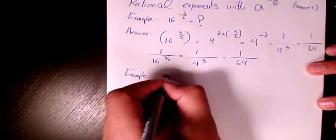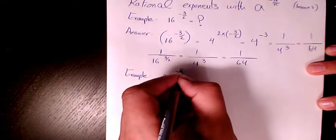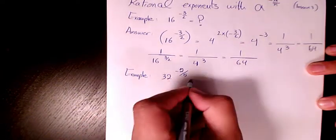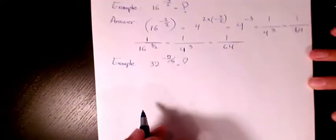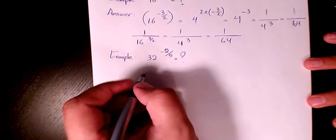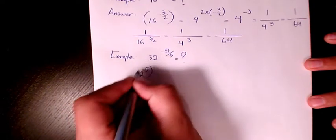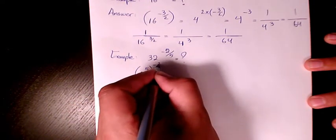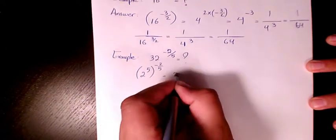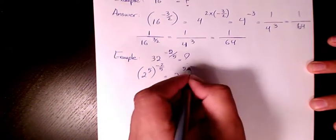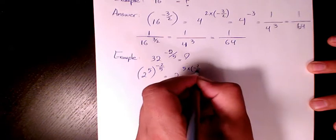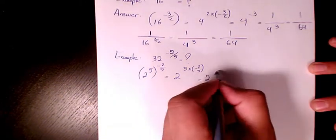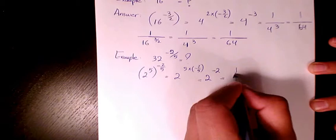The next example is 32 to the power of negative 2 over 5. Since 32 equals 2 to the power of 5, we have 2 to the power of 5 times negative 2 over 5. The 5s cancel out, giving 2 to the power of negative 2.